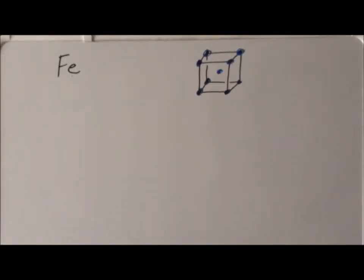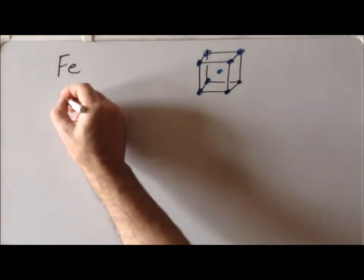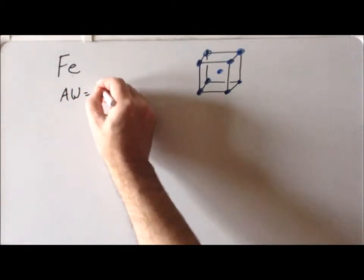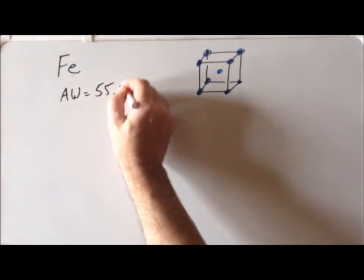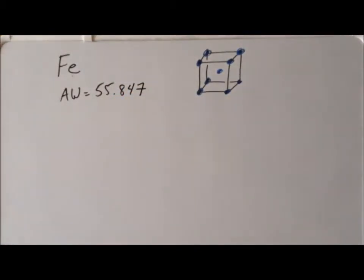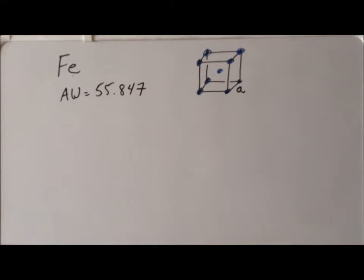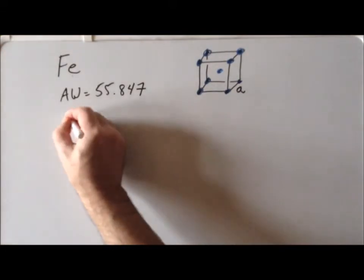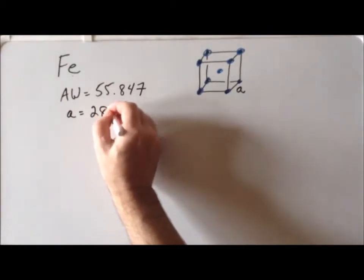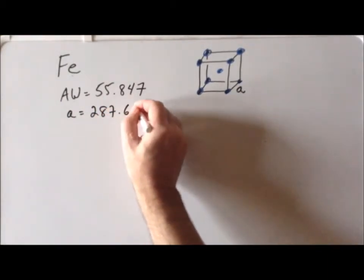In this episode, our objective is to calculate the density of iron using its crystal structure data. Iron crystallizes in the body-centered cubic structure, which has two atoms per unit cell. The atomic weight of iron is 55.847 grams per mole, and the edge length A of the cube in the body-centered cubic structure for iron has a length of 287.645 picometers.